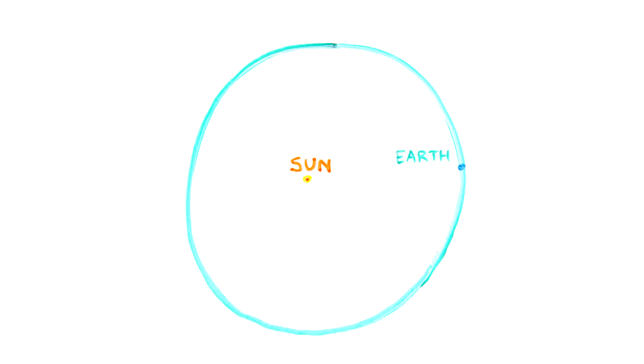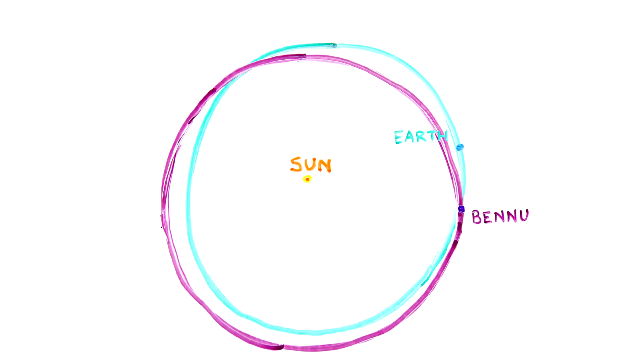After it escaped its family, Bennu's orbit changed until it became a near-Earth object. Bennu's orbit makes it a potentially hazardous asteroid, which could possibly threaten Earth one day.